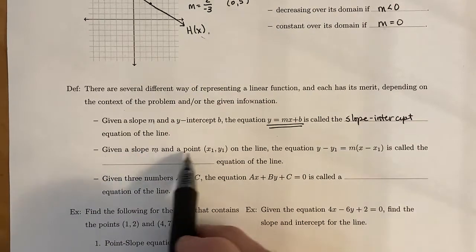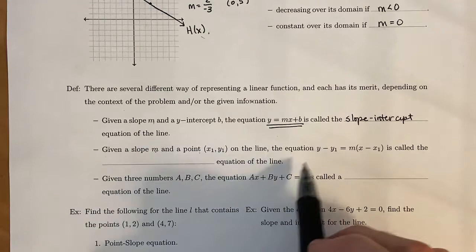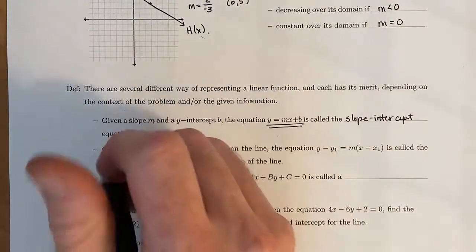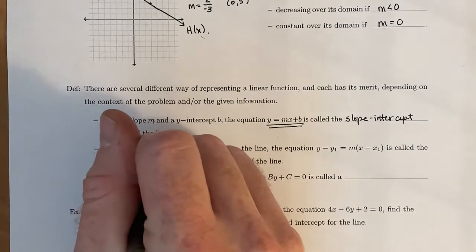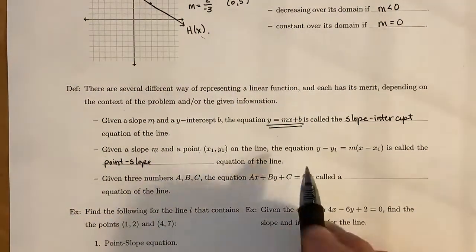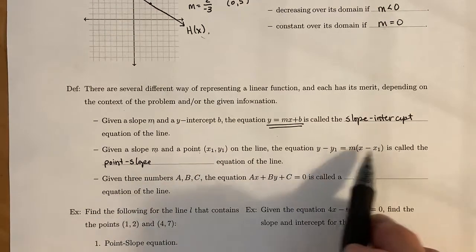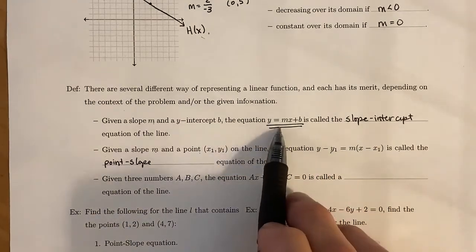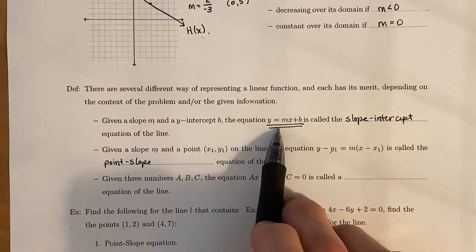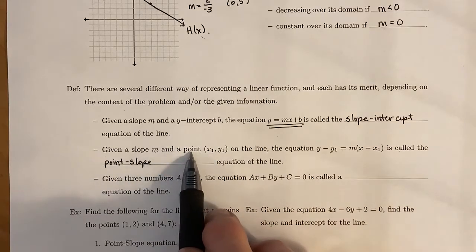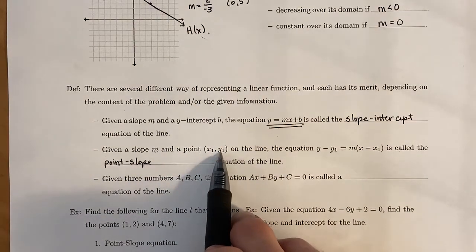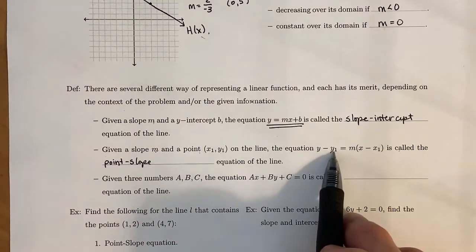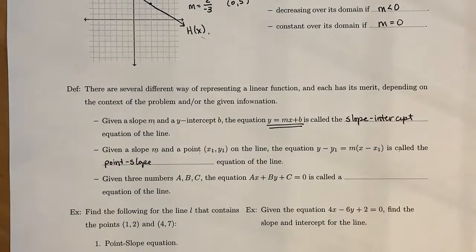Now, if you're given a slope m and a point, say x1, y1, on the line, then the equation y minus y1 equals m times x minus x1 is called the point slope equation of the line. Notice that if we add y1 to both sides, we get y equals. And if we distribute the m and combine like terms, we'll end up with the slope-intercept equation of the line. Likewise, if the point given to you is 0, b, then this would be 0 and that would be b. And then you would just add that over to give you the slope-intercept equation of the line.